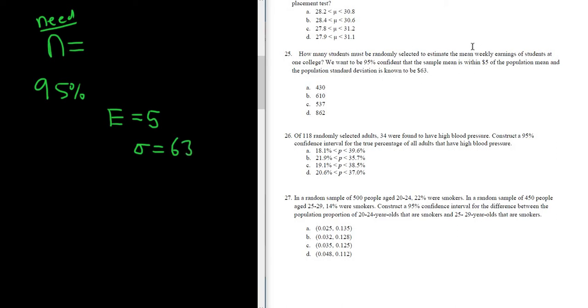So the margin of error is always given in these problems. In this case, it's the distance between the sample mean and the population mean. So that's 5. They'll always give it to you in some way. Sometimes it'll just say margin of error. But whenever you have a problem and you're looking for a sample size, they always have to give you this.